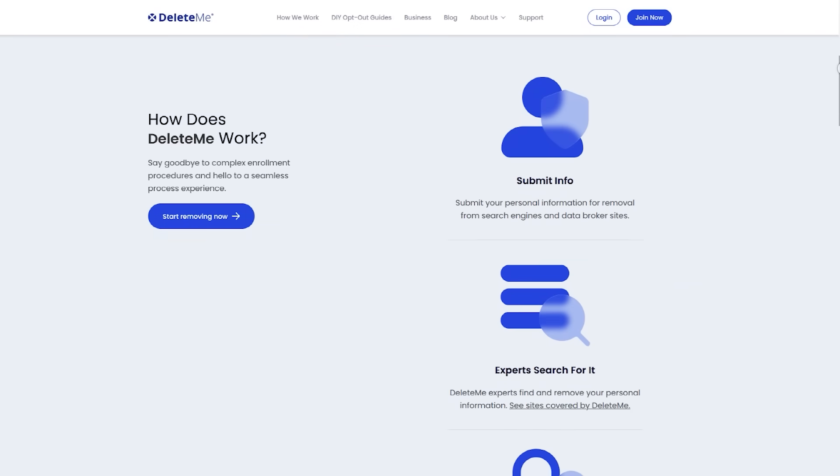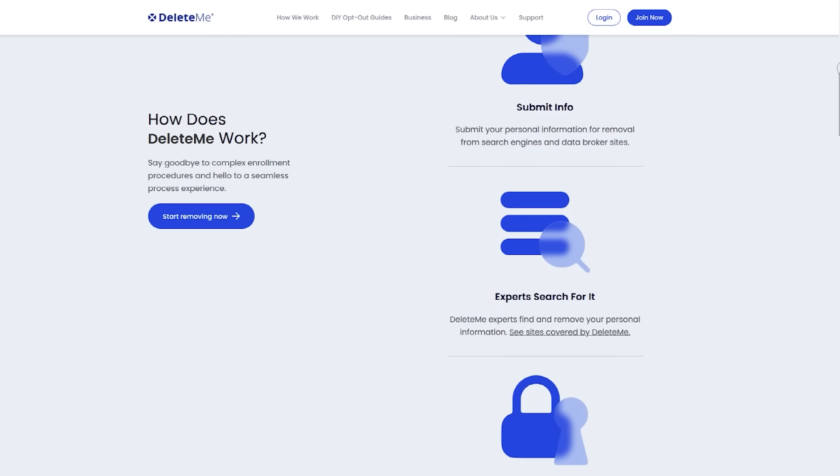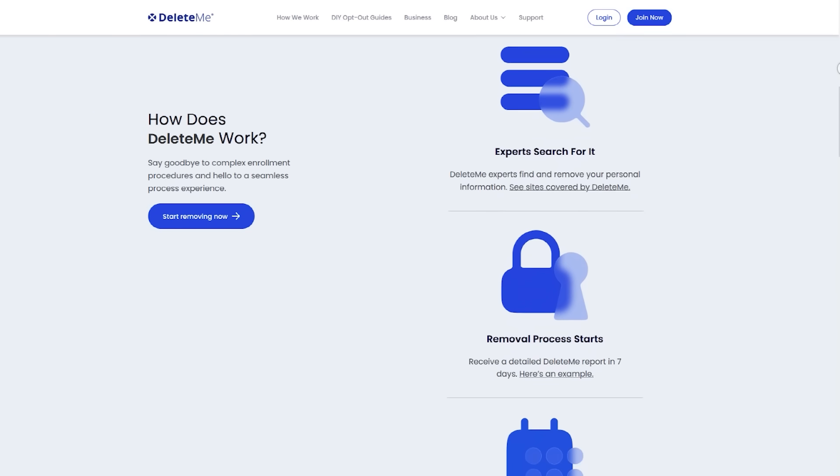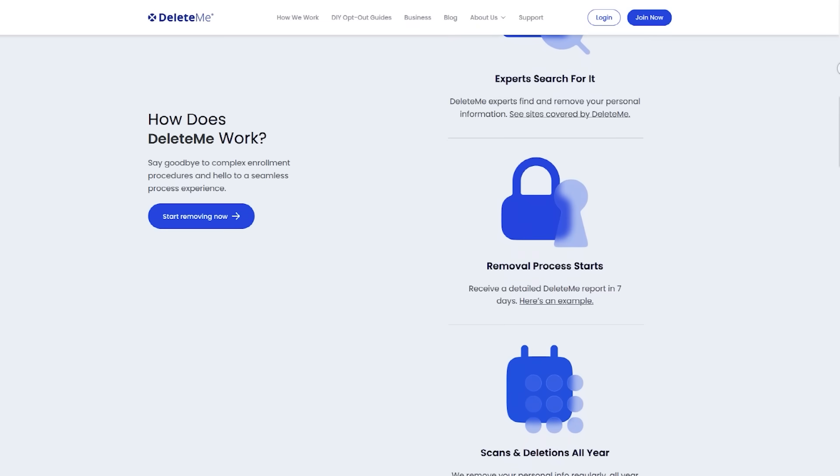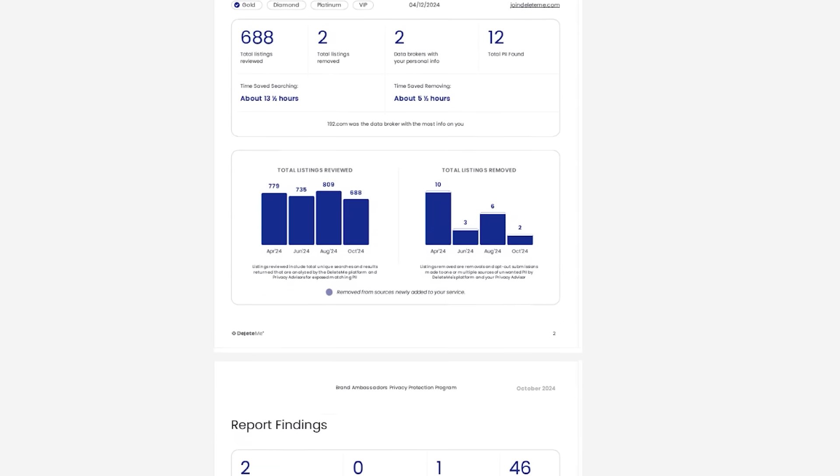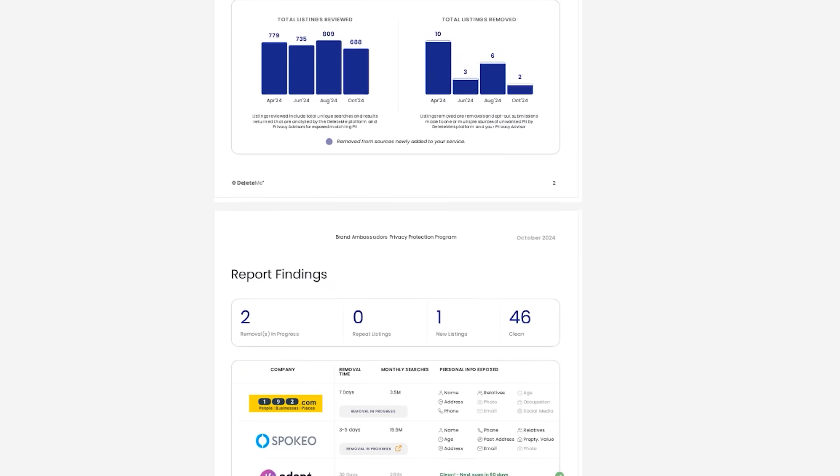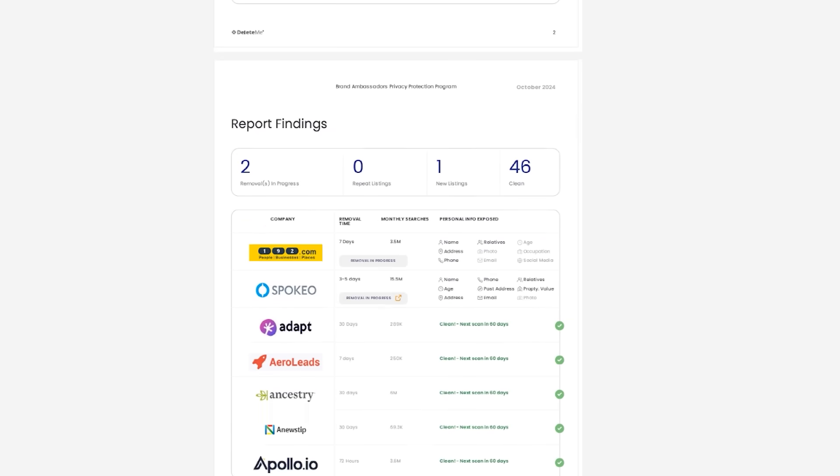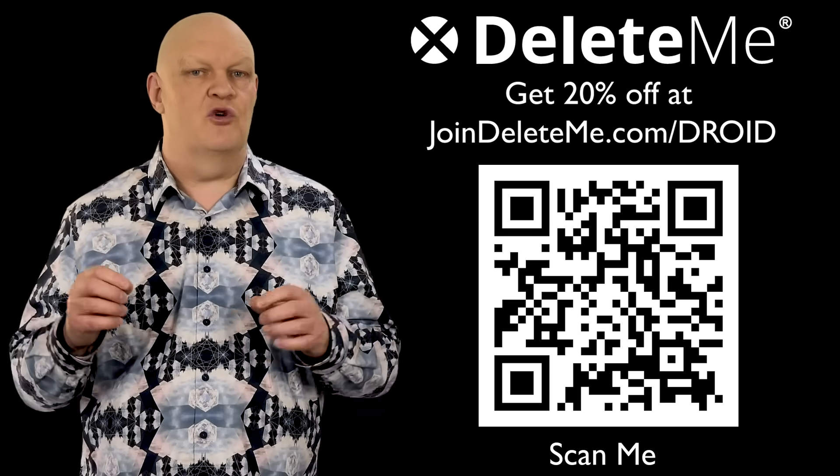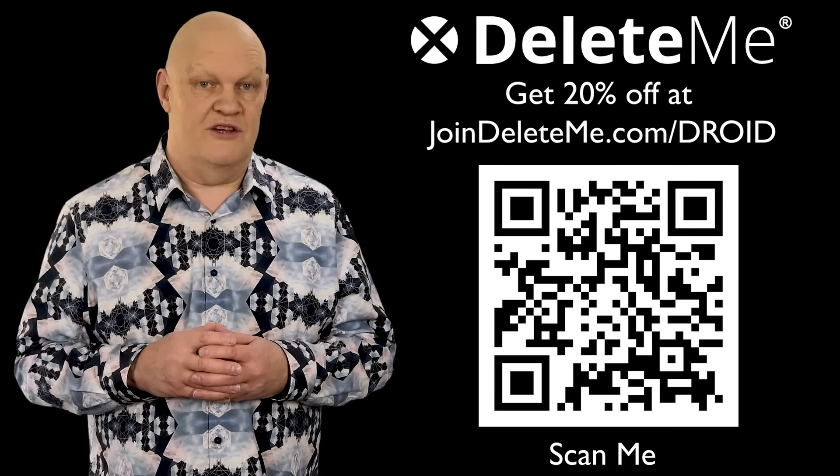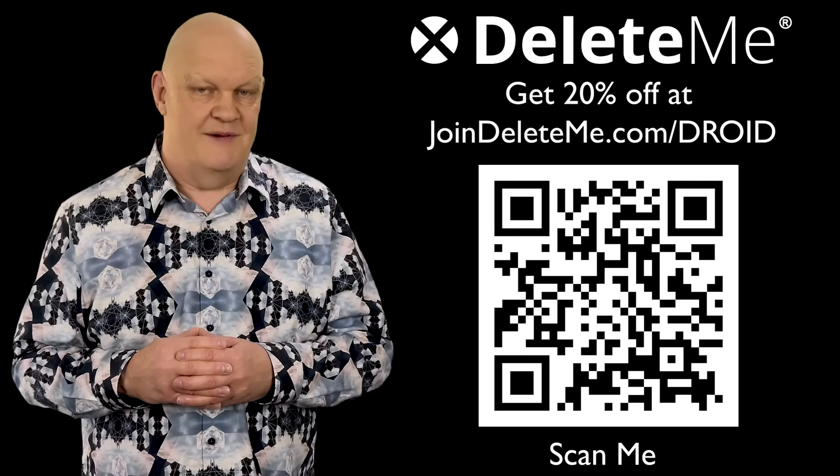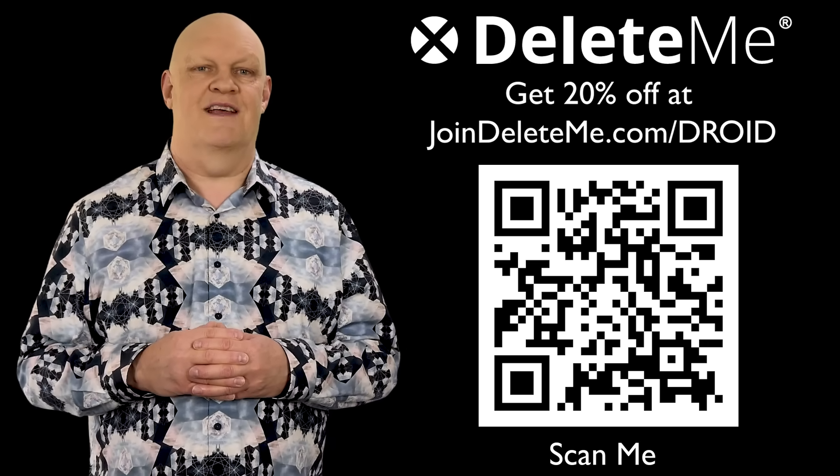Delete Me is simple to use. You just select the plan you want, fill in the online application and Delete Me will contact the hundreds of data brokers to remove you from their lists. You will receive regular privacy reports that show how much data was found, where it was found and where it was removed from. You can do this for yourself or for your family and if you use the join delete me dot com forward slash droid link in the description below or scan the QR code next to me today, you will receive a 20% discount.